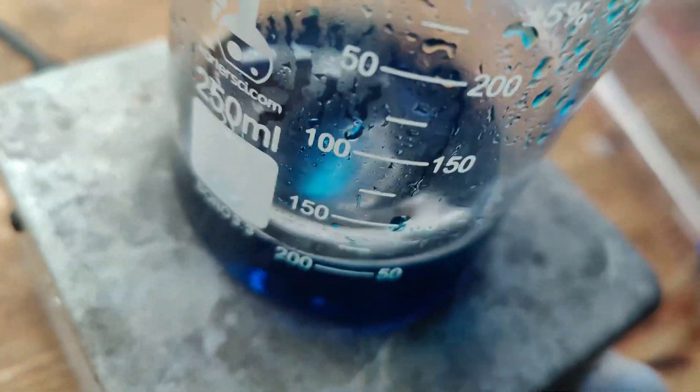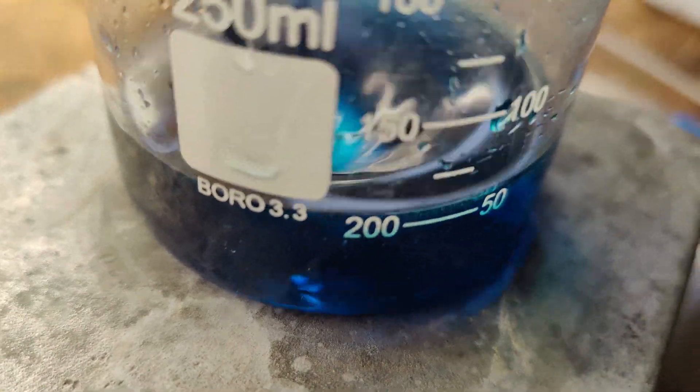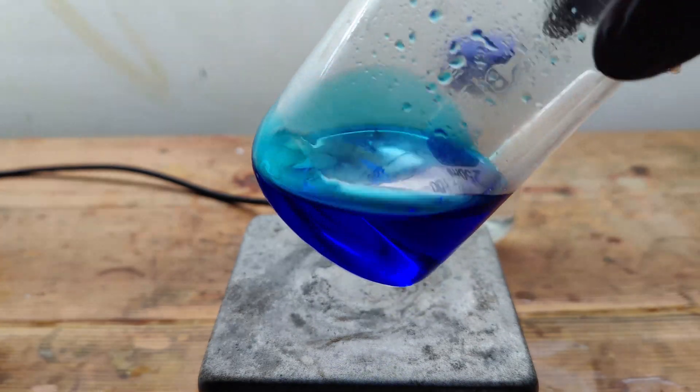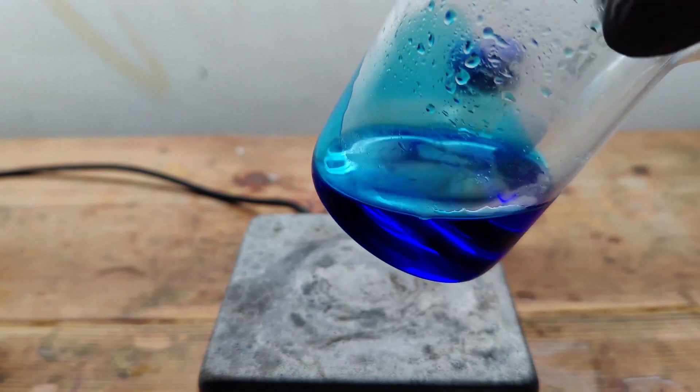After adding all the acid and waiting for the reaction to slow down, I removed the excess copper wire and stirred the solution over a gentle heat. What I ended up with was a clear blue solution with a slightly viscous composition.